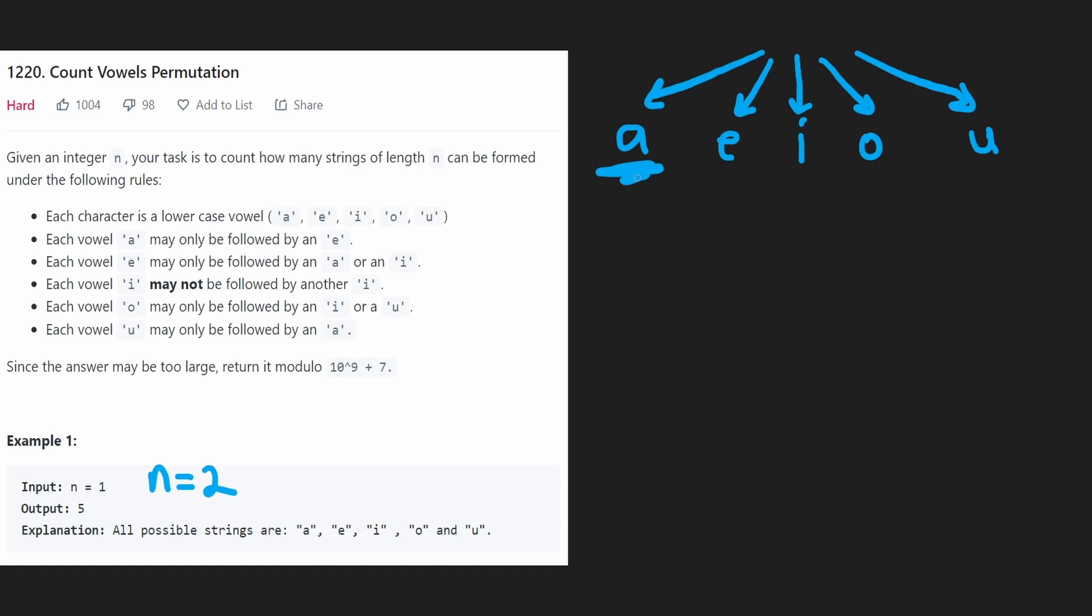So going on this path, how many strings of length two can we create? Well remember a's can only be followed by e's. So the only choice we have here is to put an e. What about for this path? e's can only be followed by a's or i's. So we actually have two choices here. We can put an a here or an i. So we can end up getting two strings like this.